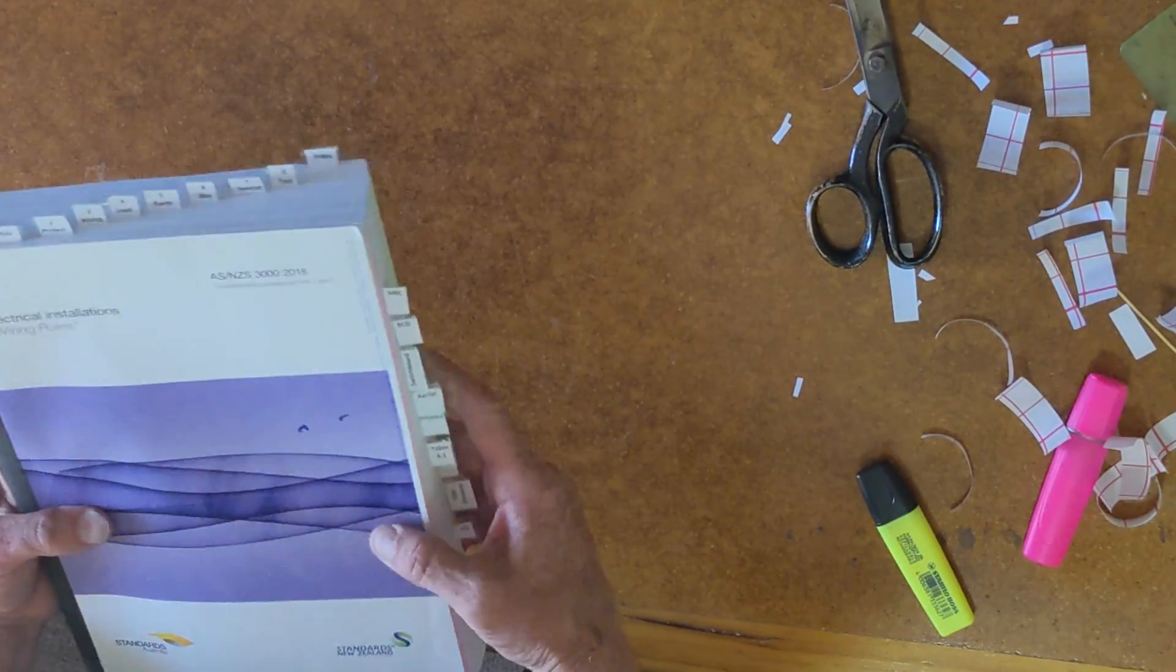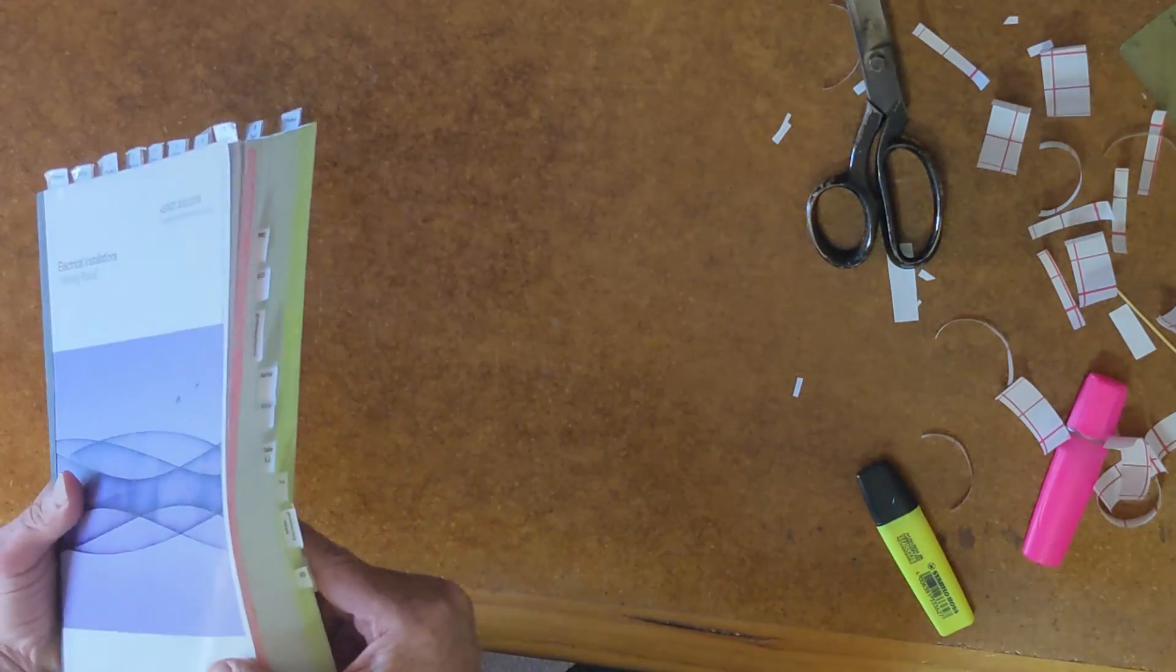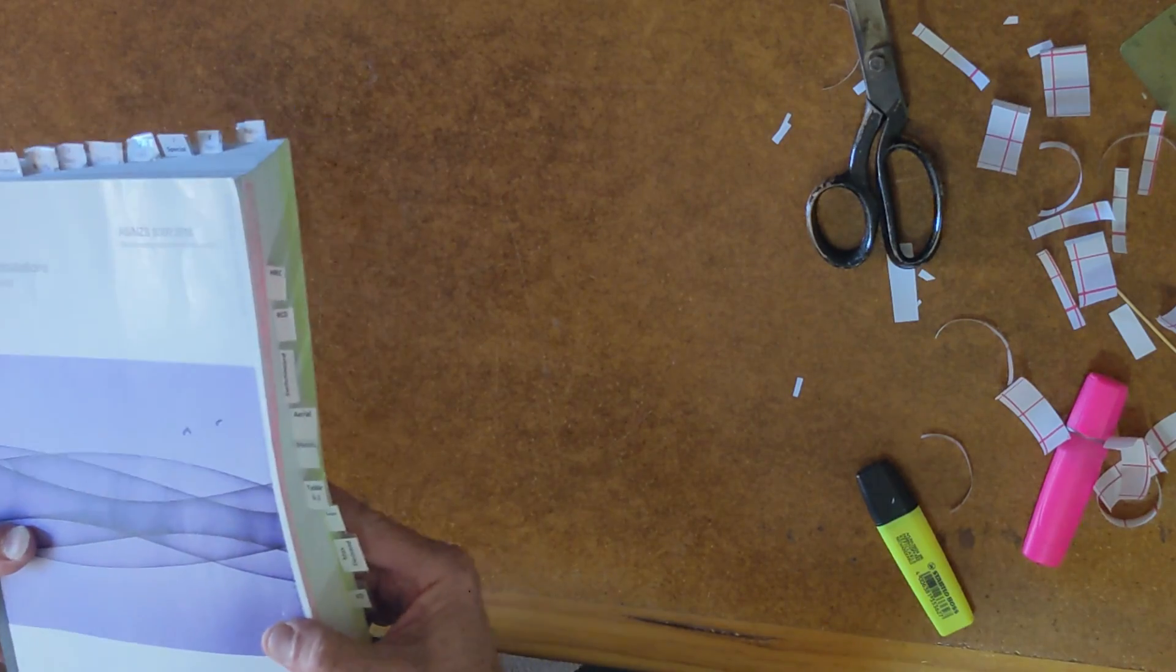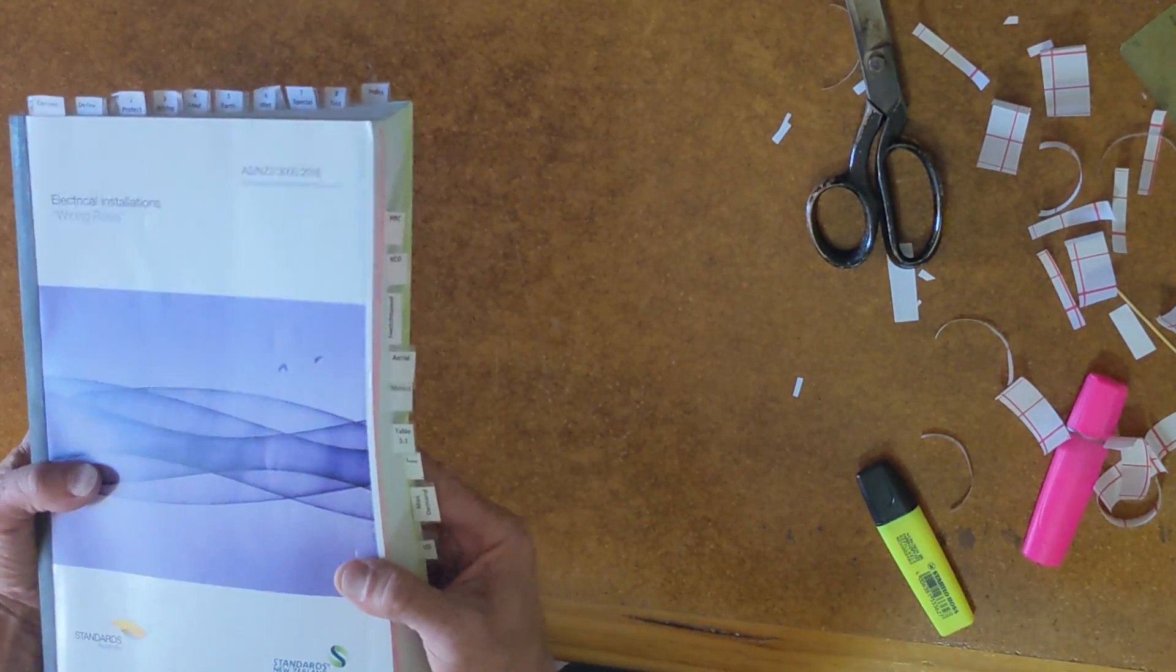The point of the tags is to help you navigate the book quickly, not to show you where absolutely everything is. Too many tags and you suffer from the law of diminishing utility.